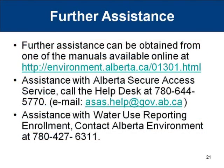You should now be able to access the WURS system and enter your water use data. If any of the steps are still unclear or you want to refresh your memory prior to entering the system again, please refer to one of the manuals available online from Alberta Environment's WURS home page. If you require any assistance with Alberta Secure Access Service registration, call or email the Help Desk. The contact information is shown on the screen. If you require any assistance with the Water Use Reporting Enrollment, contact Alberta Environment at the number shown on the screen. This concludes our Stepwise Guide to Accessing WURS. We hope this video presentation has helped make online access, registration, and reporting quick and easy for you. This video is developed and sponsored by the Alberta Water Council, which greatly appreciates the cooperation of its partners, including Alberta Environment and the Alberta Urban Municipalities Association.